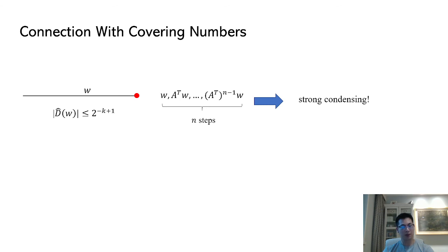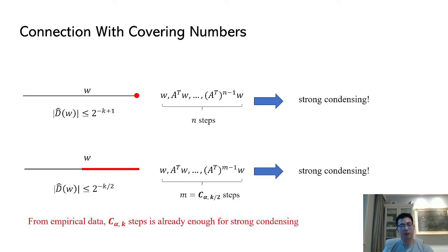Can we reduce the number of steps while still having strong condensing? The answer is affirmative. If the first k over 2 bits of w or the red segment in the illustration contains 1, then we instantiate our main lemma and see the absolute value of its Fourier coefficient is upper bounded by 2 to the minus k over 2. Otherwise, upper bounded by 1. In this case, we only need Calvary number alpha k over 2 steps for strong condensing from two-monotone distributions.